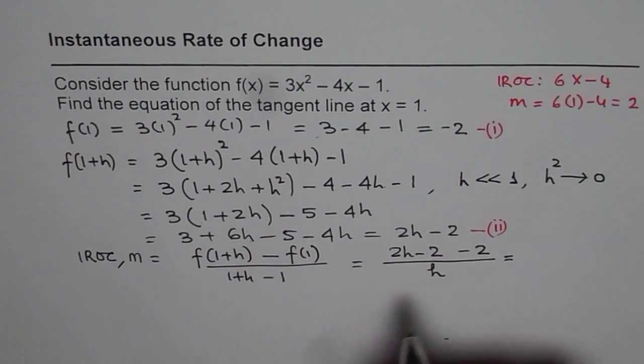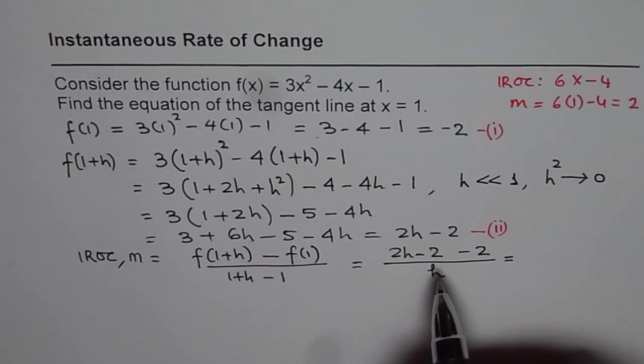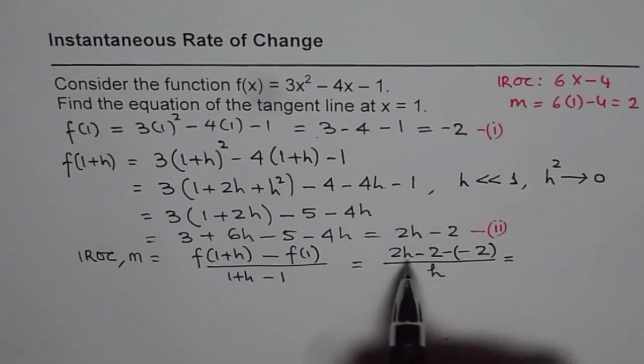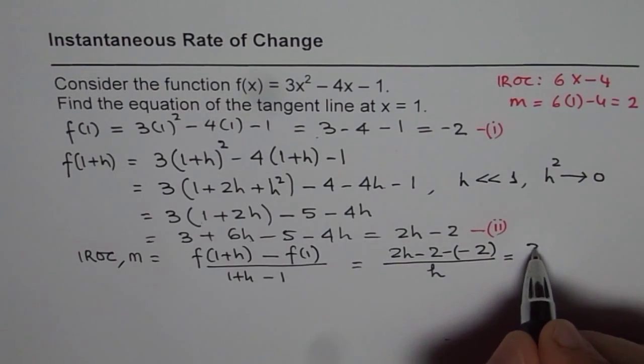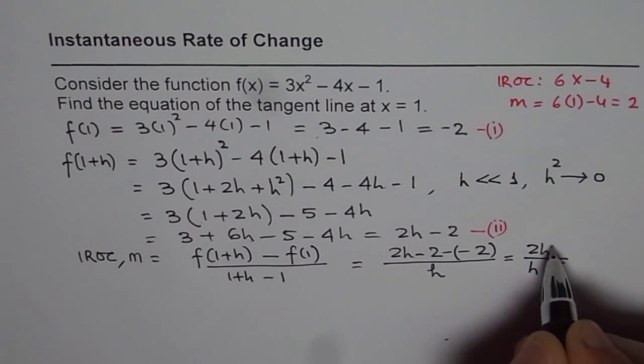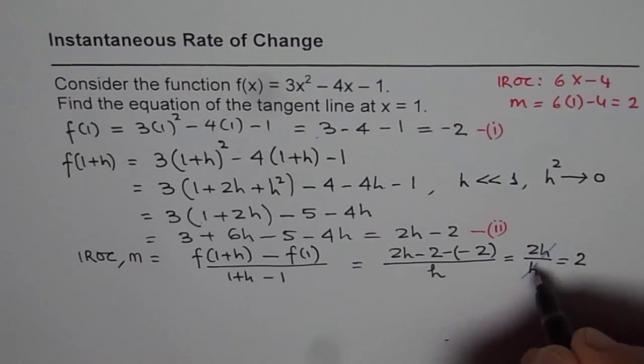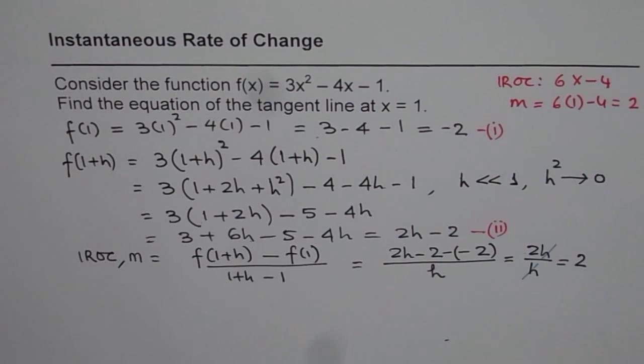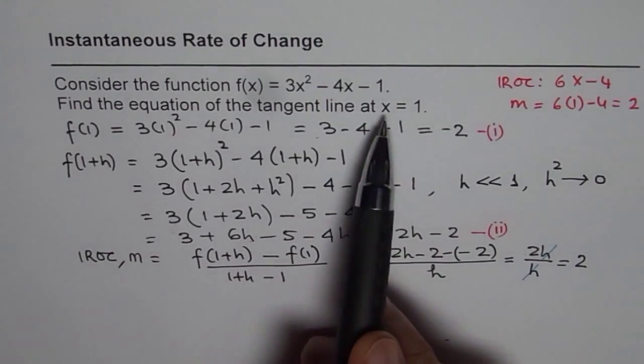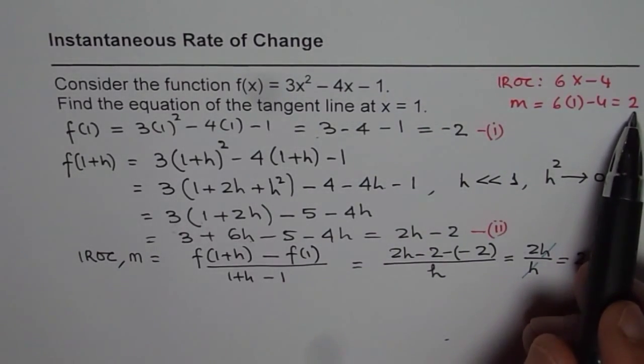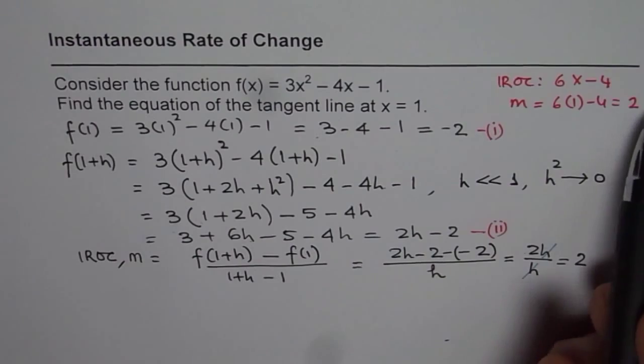And that gives us, or minus of minus 2 will make it, I should have written minus of -2. And that gives us 2h over h. You can cancel out h and you get 2 as your answer. So once you cancel h, you get 2 as your answer. So instantaneous rate of change, or the slope of your tangent line at the given point, which is x = 1, is indeed 2 as we expected.